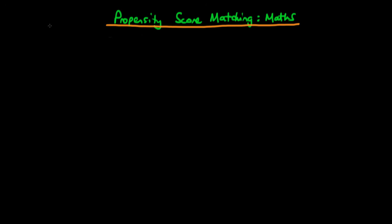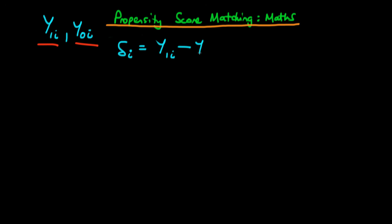The Rubin causal model defines two levels of a potential outcome variable for an individual. There is the value of the outcome variable had they chosen the treatment, y1i, and for each individual i there is a value of the outcome variable had they not chosen the treatment, y0i. The individual causal effect of the treatment is the difference between y1i and y0i.